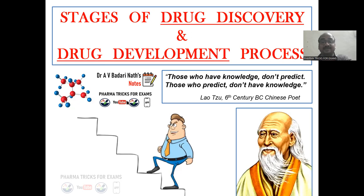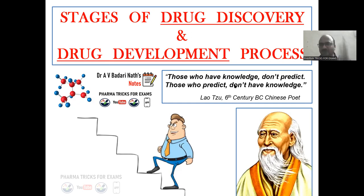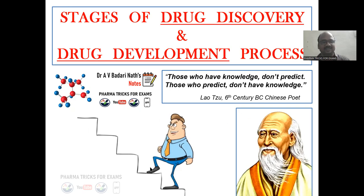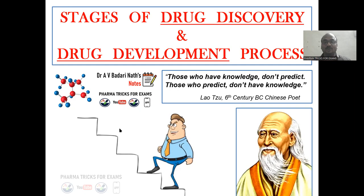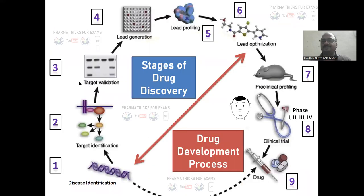How are you going to develop a drug? Either by prediction or by scientific knowledge. There is a quote from a Chinese scientist: those who have knowledge don't predict — they do it properly in the laboratory. Those who predict don't have knowledge. The various stages of drug discovery can make you wealthier than the richest people like Amazon's founder or Elon Musk. Crystal clear stages of drug discovery.